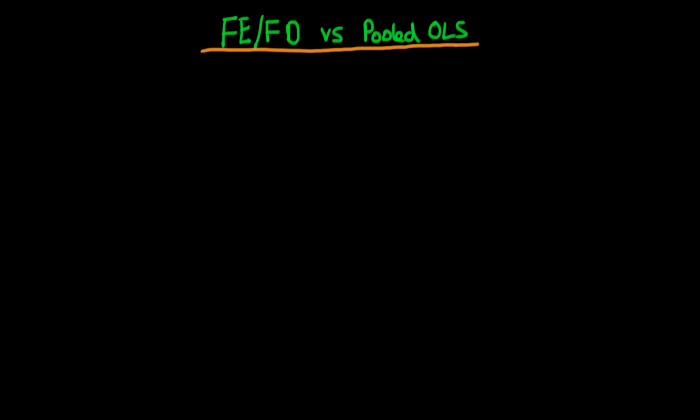In this video, I want to provide some intuition as to why fixed effects and first differences estimators actually provide a much better estimate of parameter values than pooled OLS in general. The example I'm going to be considering is the determinants of crime in a city i at a time period t.